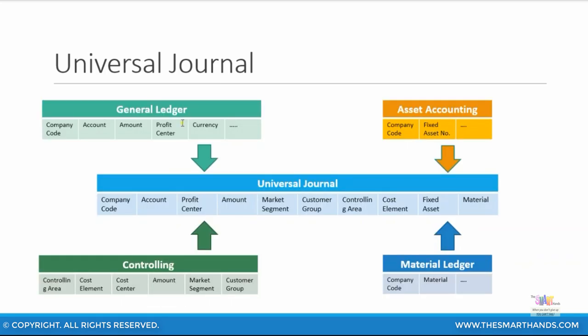In this diagram, we can see this in more detail. For example, in your general ledger tables, you will have your company code, general ledger account, amount, profit center, currency, and so on. These are all copied to the universal journal table.